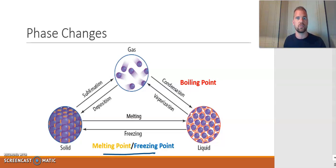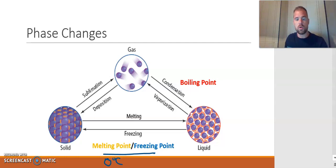Take for instance water. What is the melting point — the temperature that water goes from solid to liquid? That temperature, the melting point, is zero degrees Celsius for water. But what's the temperature that liquid water would freeze back into solid ice? That's also zero degrees Celsius. So they are the same temperature, but we refer to it as the freezing point when the object is freezing.